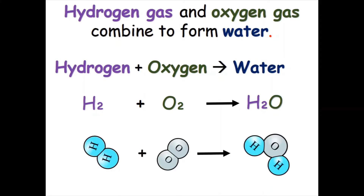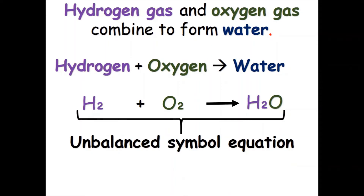This is now an unbalanced symbol equation, and you can see why if you look at the atoms here. We have two hydrogen atoms and two oxygen atoms on the left for the reactants, but on the right for the product water we have two hydrogen atoms but only one oxygen atom. This means the number of atoms is not the same on both sides, which is why this is an unbalanced symbol equation.